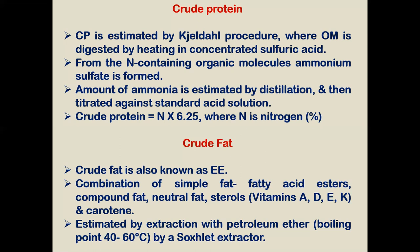Crude fat, also known as ether extract, can be estimated using the Soxhlet apparatus. Feed contains a combination of fats — free fatty acids, esters of fatty acids, neutral fat, acetols, different vitamins, and carotene — which are collectively extracted from the sample when petroleum ether with a boiling point of 40 to 60 degrees centigrade is used.